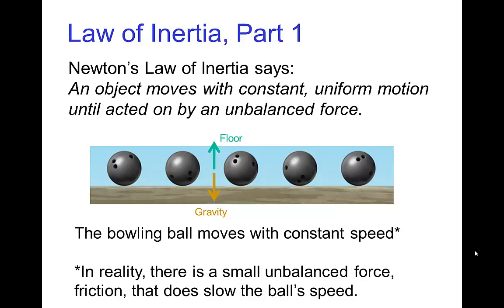So in this case, there's no unbalanced force, and so we have constant uniform motion — the speed of the bowling ball is constant and it moves in a straight line. This is a bit of an approximation because there's going to be a little bit of friction that's going to slow the motion, but pretty much Newton's Law of Inertia applies here.